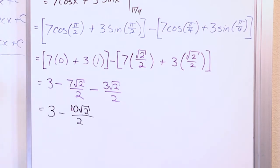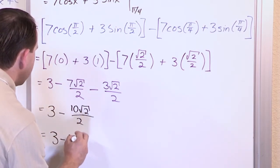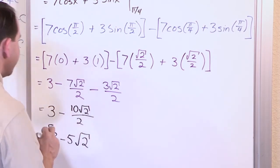Of course, the 2 is on the bottom because it's a fraction. And because now we have 10 divided by 2, the answer is going to be 3 minus 5 square root of 2. And this is the final answer.